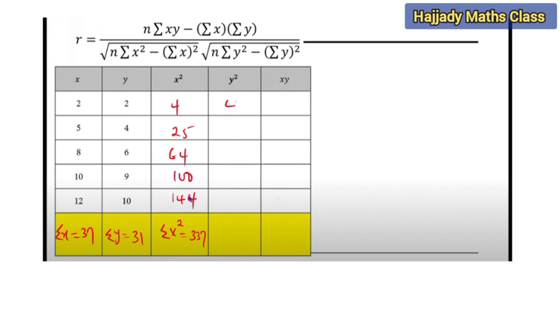The same thing for y squared. I'm squaring each of these observations: 2 squared is 4, 4 squared is 16, 6 squared is 36, 9 squared is 81, and 10 squared is 100. Summing this together is going to give us 237. And the last part is xy. That means I'm multiplying x with y. So that's going to be 2 times 2 which is 4, 5 times 4 is 20, 8 times 6 is 48, 10 times 9 is 90, and 12 times 10 is 120. So summing these together, I am going to have 282.